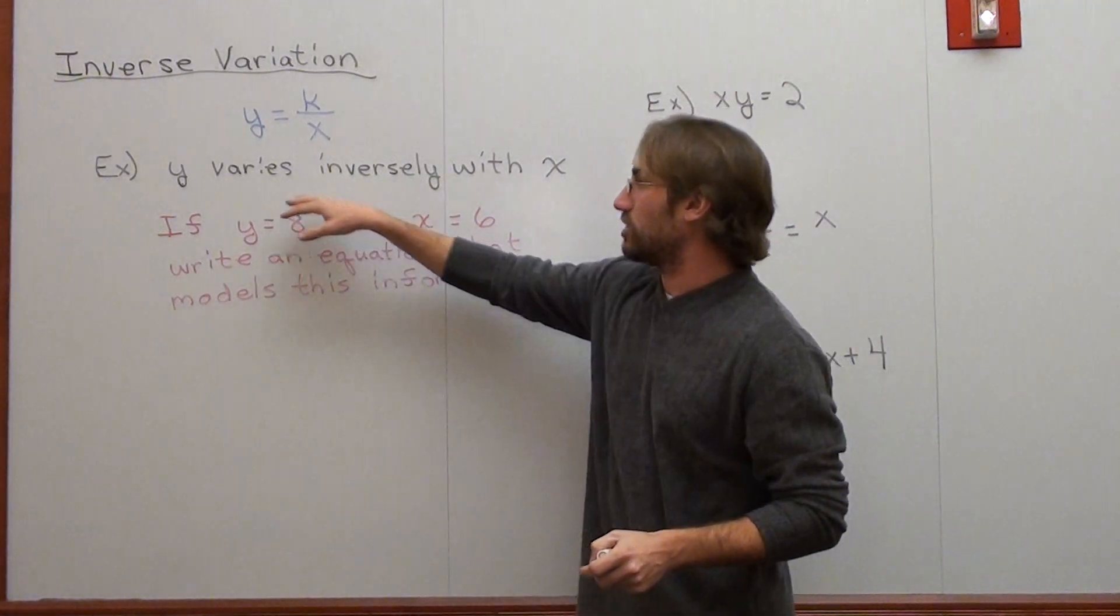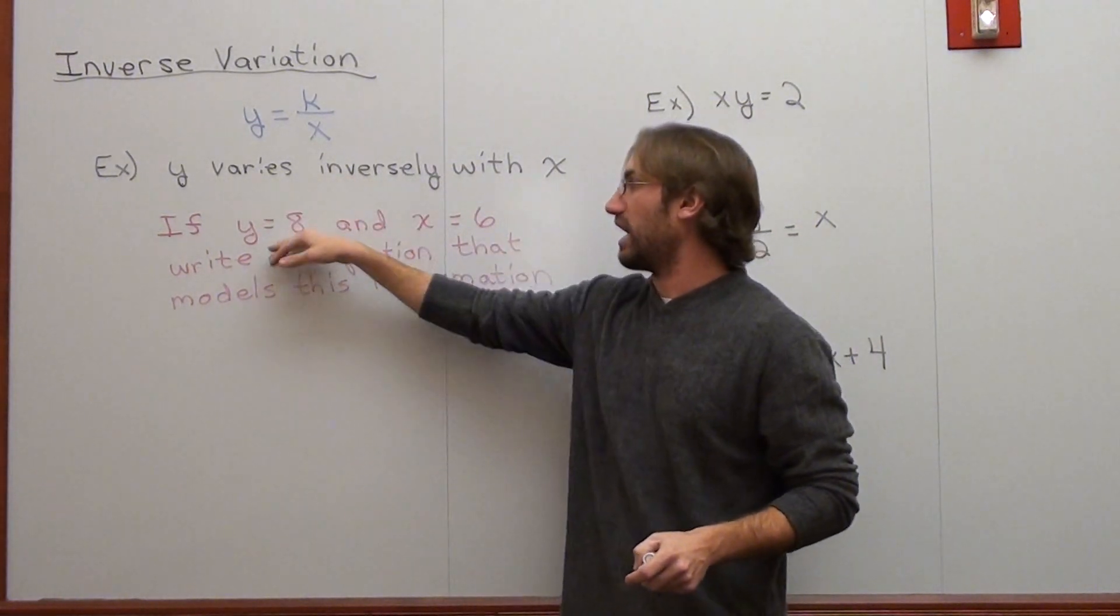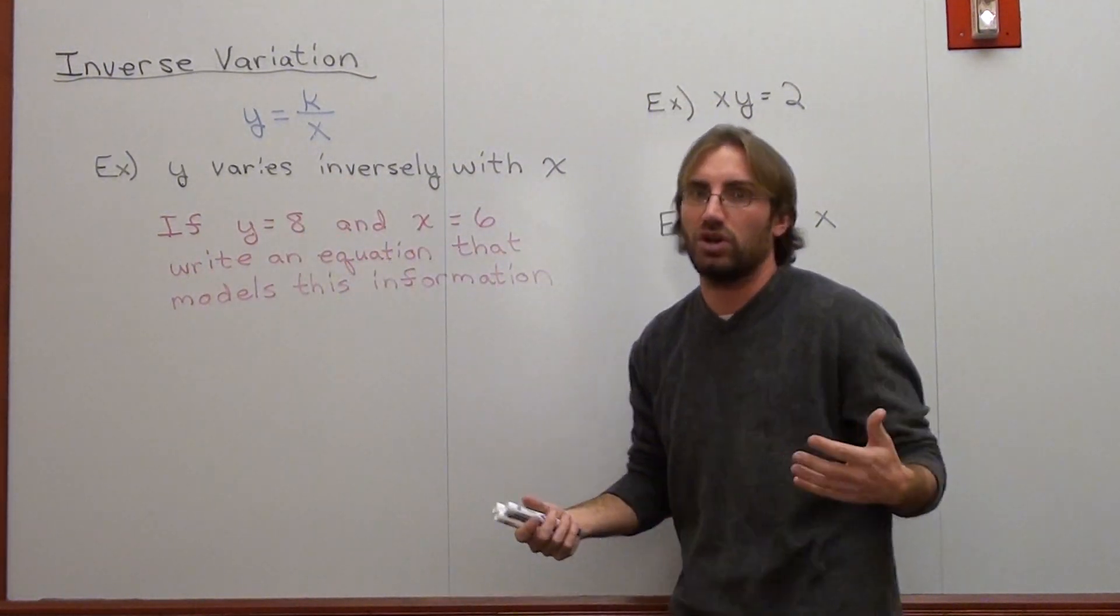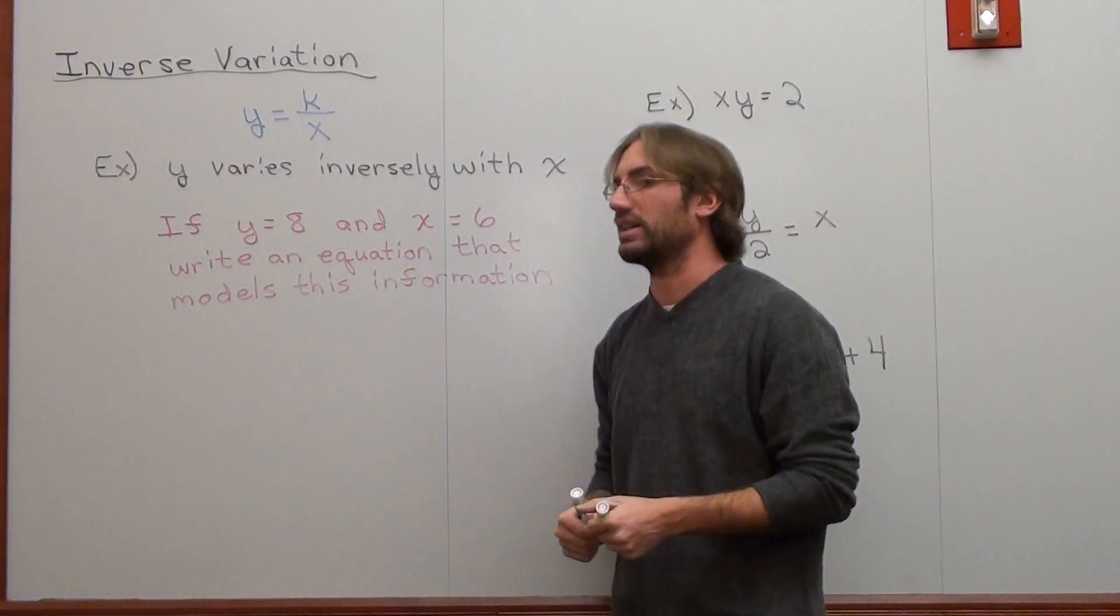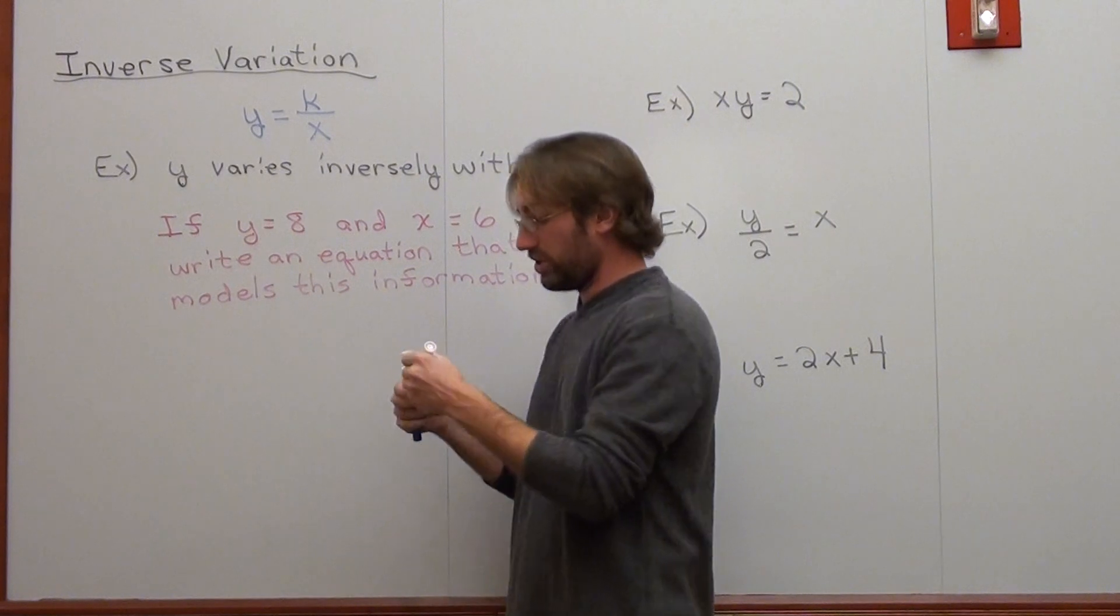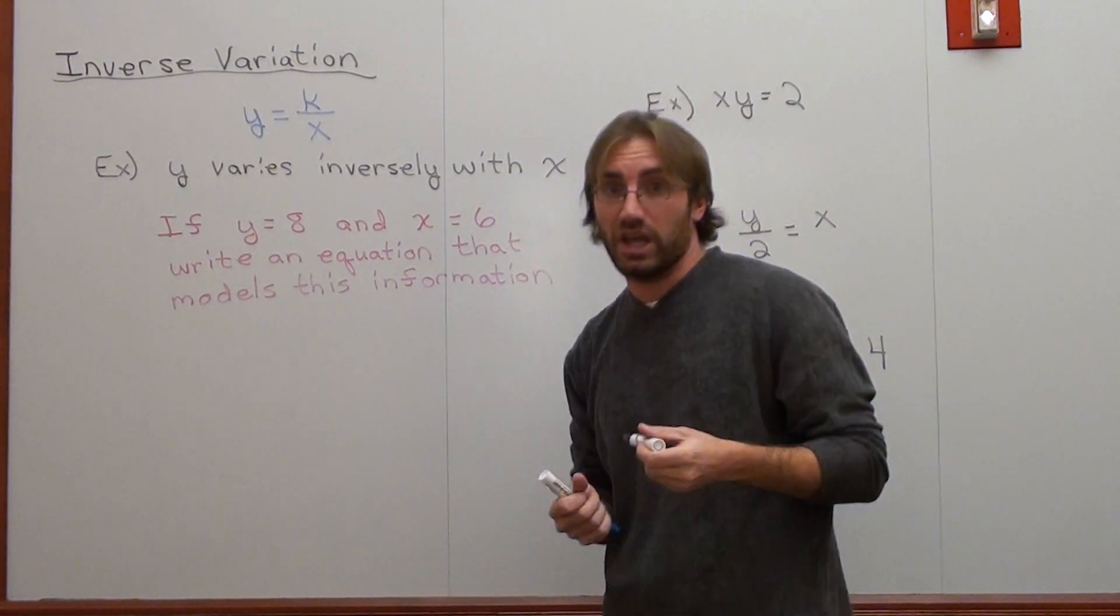So assuming that y varies inversely with x, and you have this problem right here, you're supposed to solve for it. And that's something that's typical in a math book. So that said, let's go ahead and try this. So what we do is we write y equals k over x.